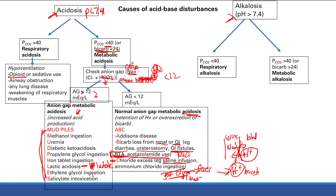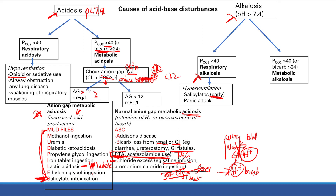Causes of respiratory alkalosis: how do we get too little CO2? You get too little CO2 when you breathe too much and breathe out all the CO2. Causes include salicylates (early) and a panic attack. Panic attack — you hyperventilate and breathe out all that CO2, getting respiratory alkalosis.